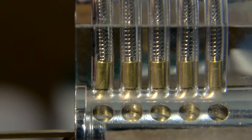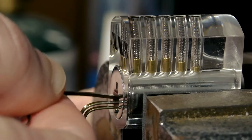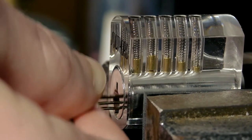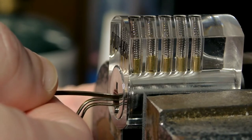As each seized pin is successfully identified by feeling it with the end of the pick, and the tension on it is released by aligning its gap with the edge of the barrel, it causes one of the remaining pins to then become seized, until every pin has finally been aligned and the lock opens.